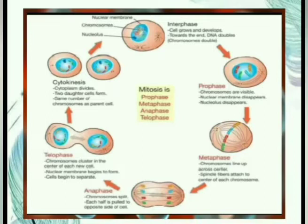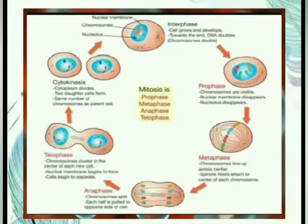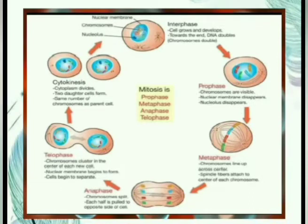The next stage is prophase — chromosomes become visible and the nuclear membrane disappears, and the nucleus disappears. During prophase, the chromosomes, which had been thin and thread-like in interphase, begin to condense or thicken, and the cell becomes more spheroid as the cytoplasm becomes more refractile and viscous. So, in prophase the nuclear membrane disappears.